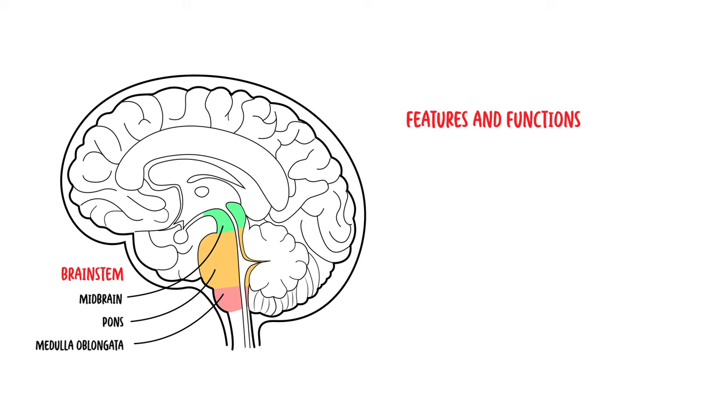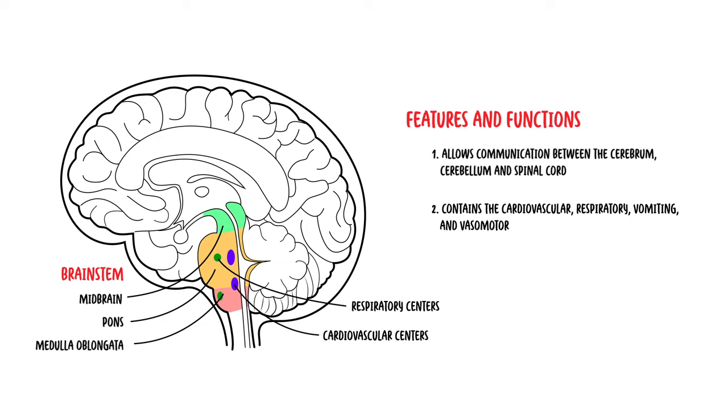As a whole structure, the brainstem allows communication between the cerebrum, cerebellum and spinal cord, and contains the cardiovascular, respiratory, vomiting and vasomotor centers which regulate heart rate, breathing and blood pressure.